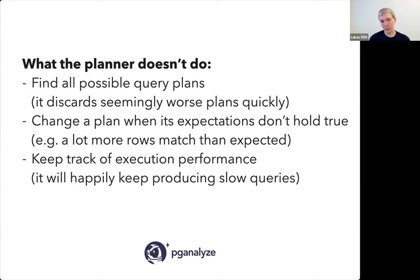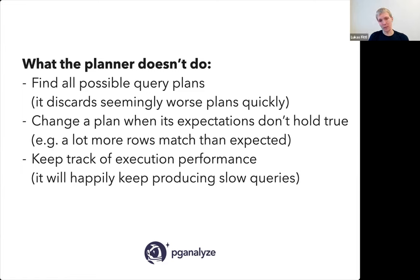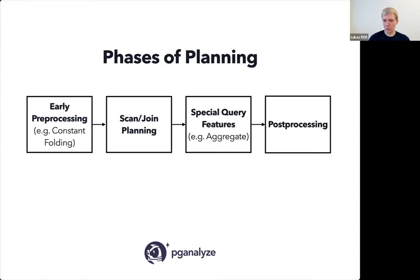The planner also doesn't change a plan when expectations don't hold true. For example, it might think a condition matches 10 rows but actually matches a thousand rows. Unfortunately it doesn't reconsider mid-execution. It also doesn't have a sense of time — the Postgres planner doesn't keep track of what the execution performance was for the query last time, so it will happily keep producing a bad plan without fixing it itself. There are four phases of planning as described by Tom.